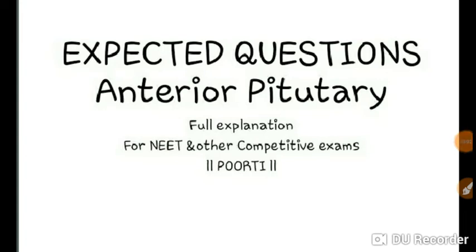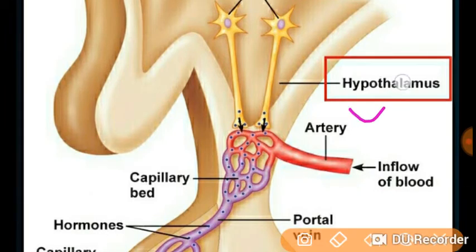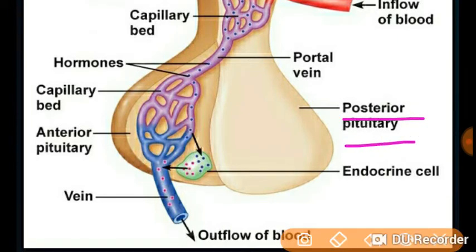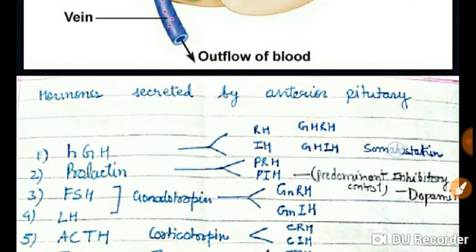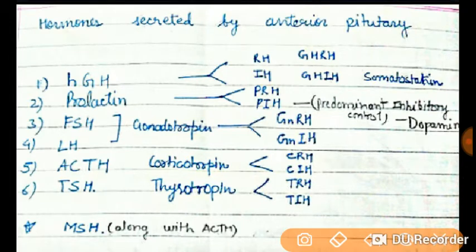In this video we will discuss the hormones secreted by the anterior pituitary. Looking at this diagram, you can see the hypothalamus and the two lobes: the posterior pituitary, which stores and releases hormones, and the anterior pituitary, which releases the hormones produced by the hypothalamus.